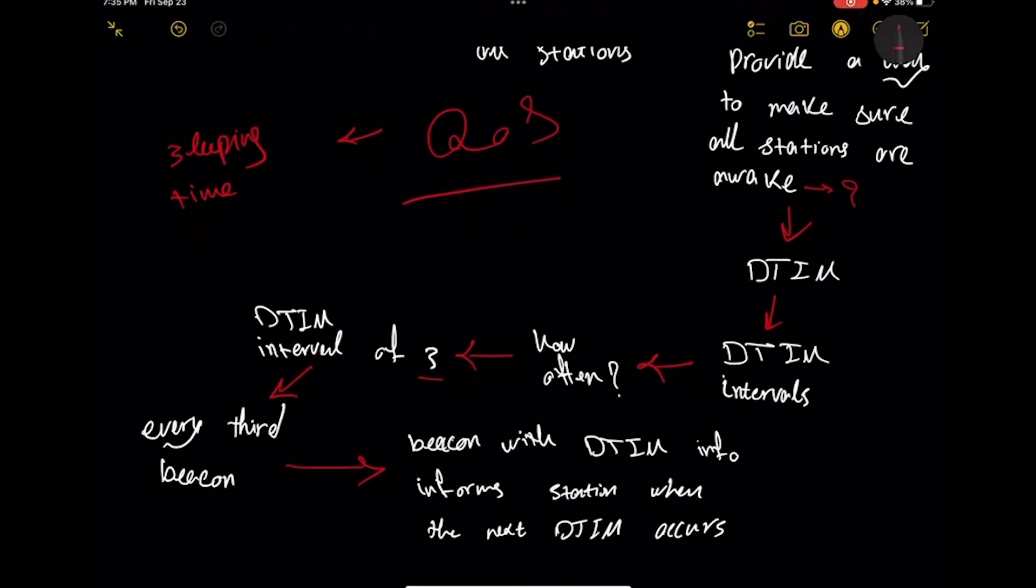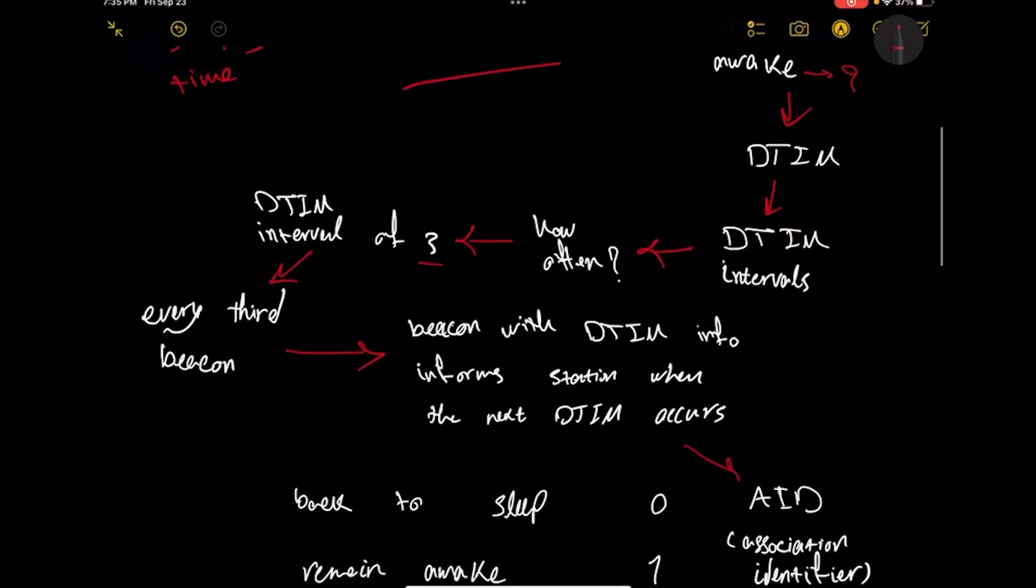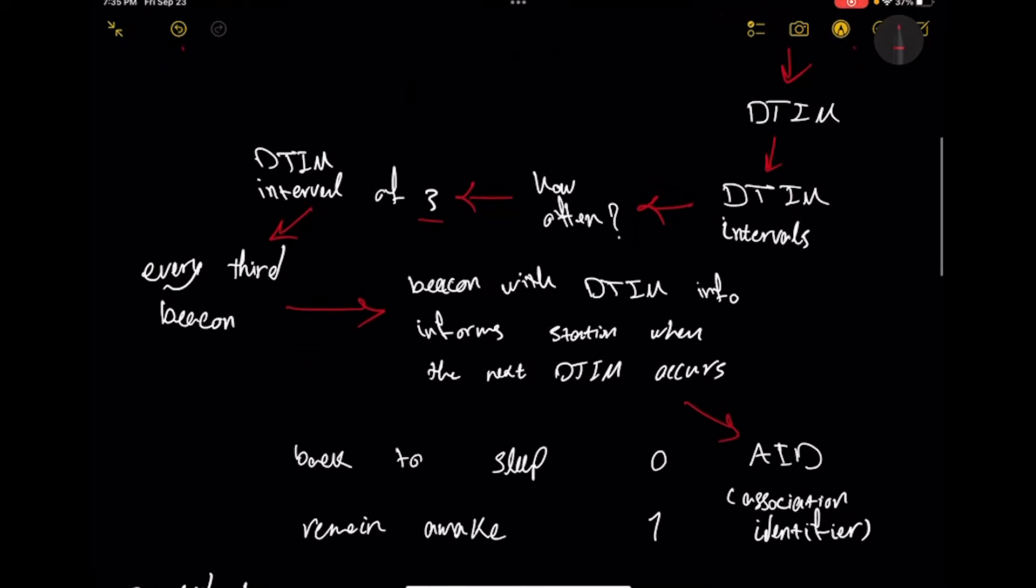We have something called AID, Association Identifier from CWNA. If it is set to zero, it means back to sleep. Basically clients will be up and check AID in the beacon. DTIM says wake up, they wake up and check if AID is meant for them. They remain awake unless they go to sleep.